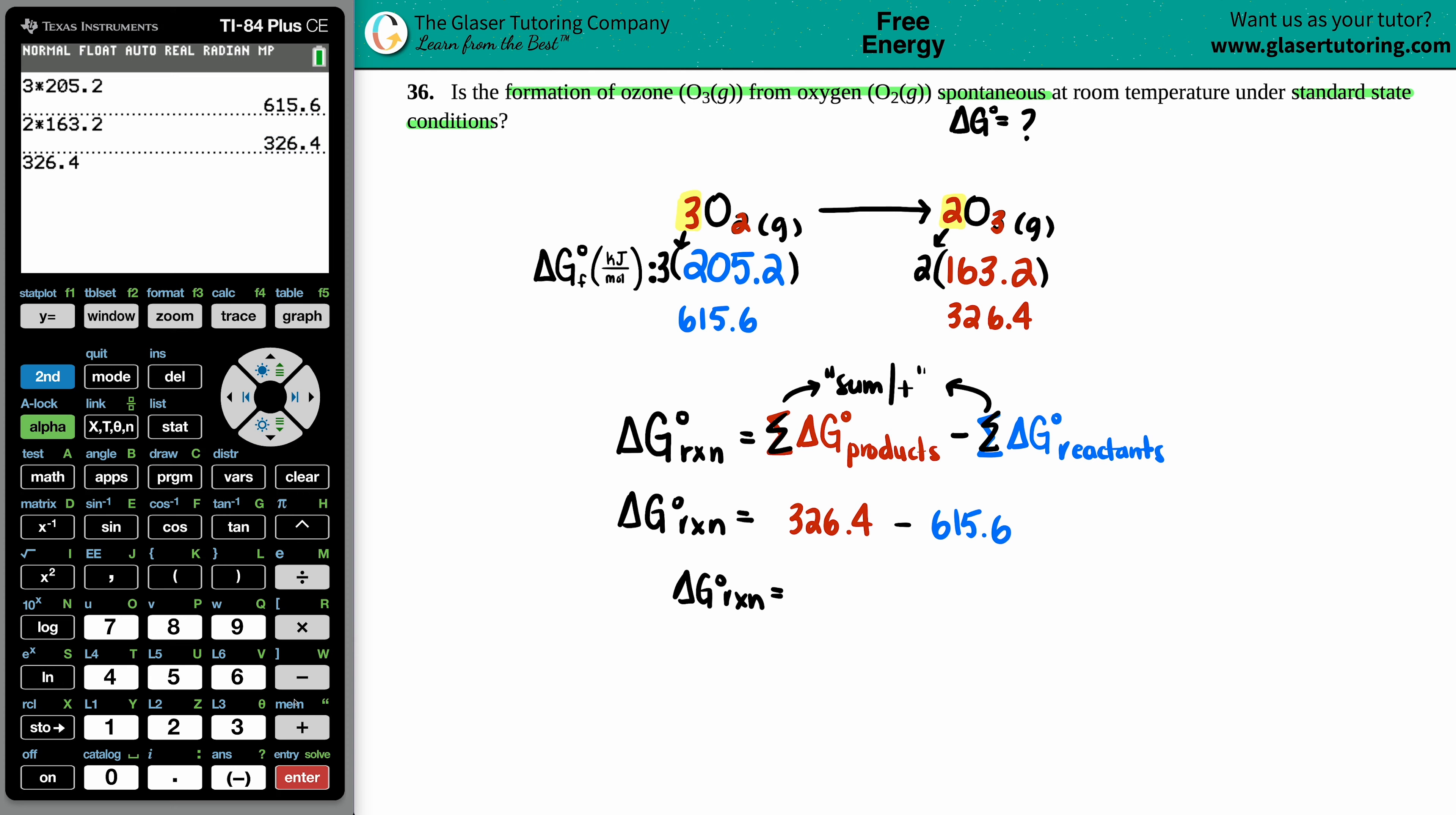Delta G for the reaction equals, I could just grab the numbers. That's why I love calc, right? Minus. And I'm going to grab it. I press this up button. Grab that number. Press enter. Look at that. And I get a negative 289.2.